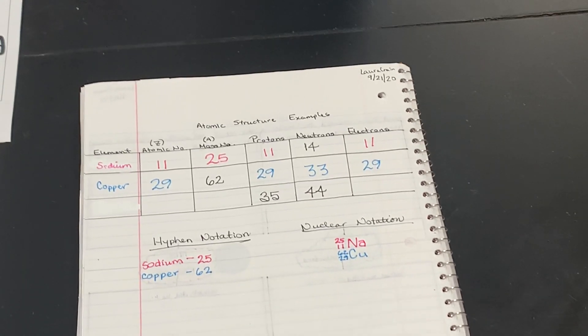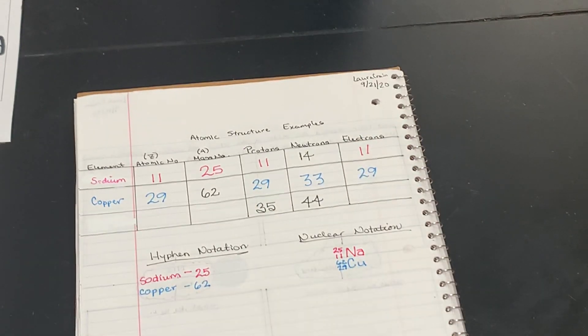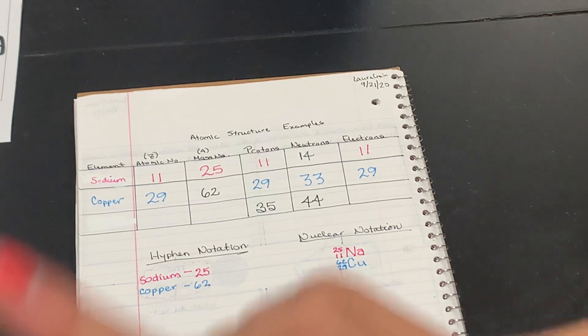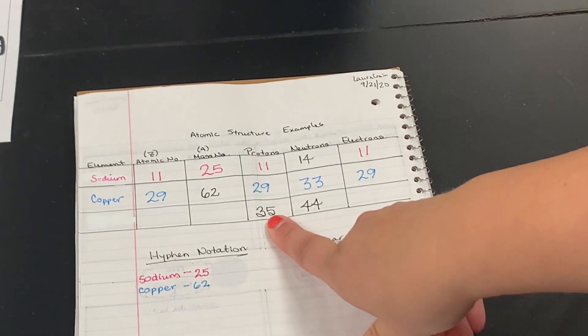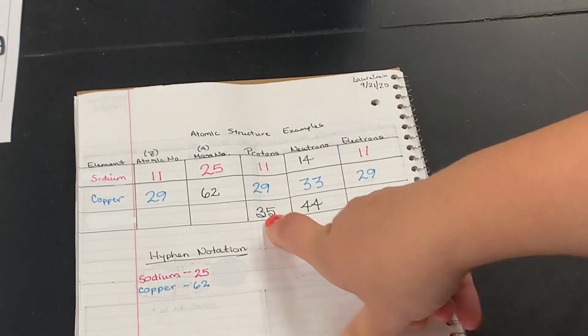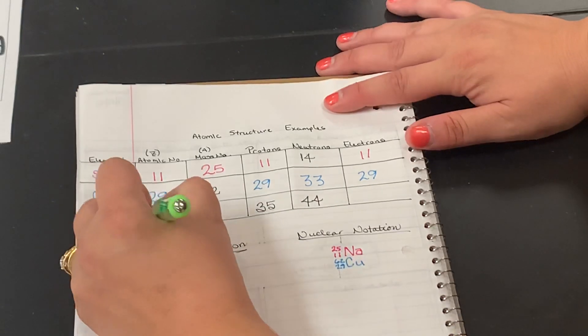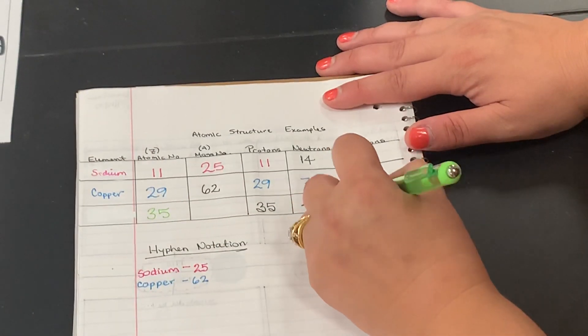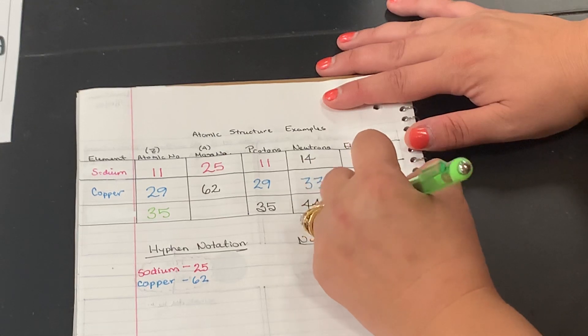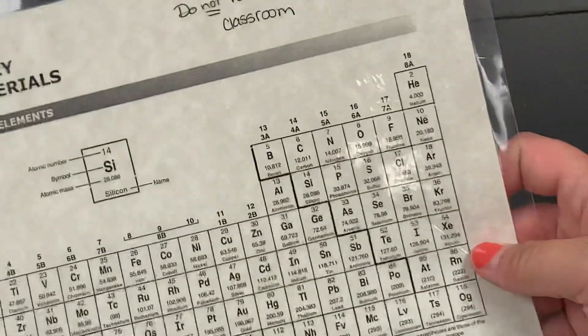On this last one, uh-oh, they didn't tell me what element it was. Can I figure it out? Yes I can, because they did tell me the number of protons. And I know that the number of protons should be equal to atomic number and electrons. So if there's 35 protons, there's an atomic number of 35, and there's also 35 electrons. So let's go figure out what element this is. What element has an atomic number of 35?